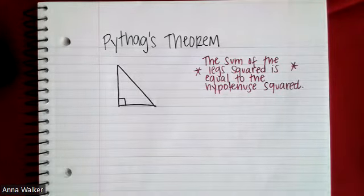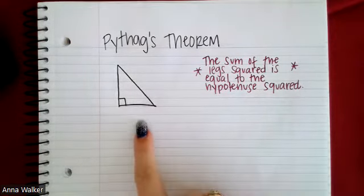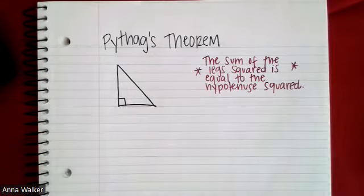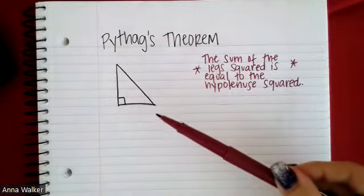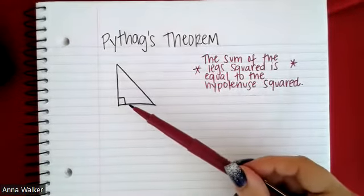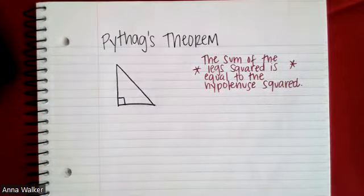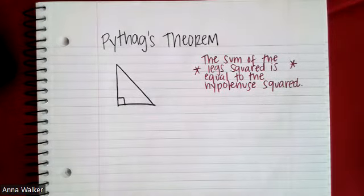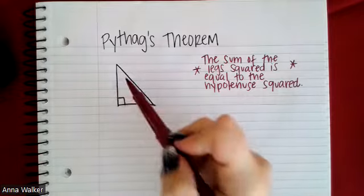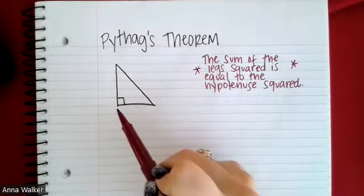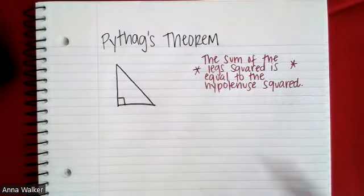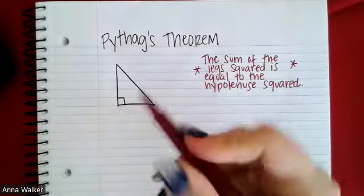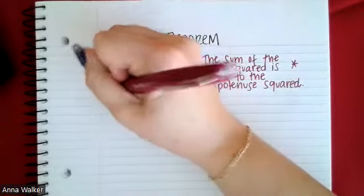The Pythagorean theorem is a unique rule or property that applies to right triangles. A right triangle is classified by having a right angle — a 90-degree angle. The two sides that are perpendicular to each other, on either side of the 90-degree angle, are called the legs.